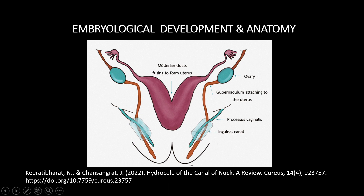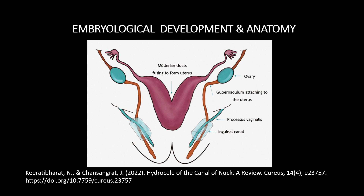In males, the gubernaculum is associated with testicular descent. In females, due to the lack of androgen as well as anti-Müllerian hormone, the gubernaculum interferes with the Müllerian duct and attaches to its mid-portion at the uterine cornua. It becomes the ovarian ligament above this attachment, and the caudal section becomes the round ligament attaching the uterine cornua to the labia majora.